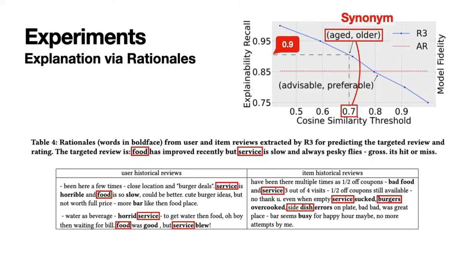Since it is common that the extracted rationales and aspects and opinion tokens are with the same semantic meaning but represented by different words, we compute the cosine similarity between their word vectors and treat cosine similarities above a certain threshold as true positive. For example, if we select a cosine similarity threshold as 0.7, it will infer that words like aged and older share the same semantics. The model can achieve a pretty high explainability recall of 0.9. That is, around 90% of the aspects and opinions are successfully discovered by the proposed Rationale Generator.